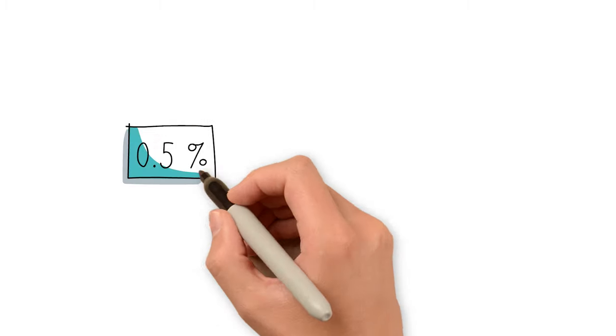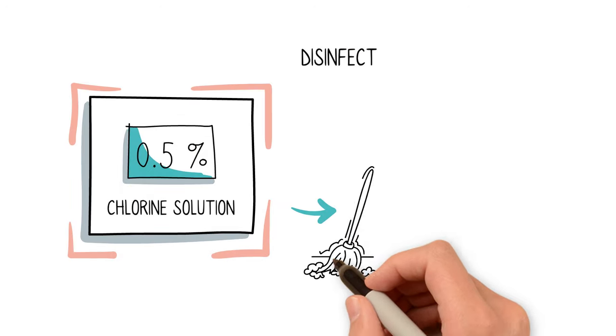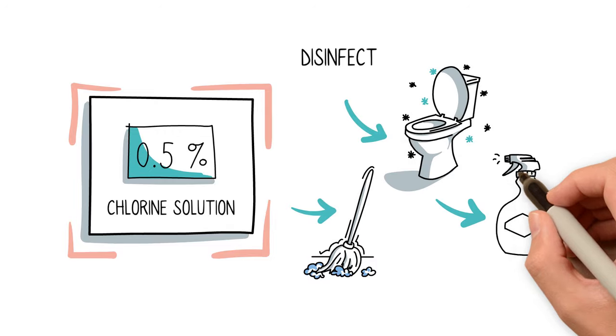Whatever the choice of the product above, the goal is to produce a solution with 0.5% of active chlorine which will disinfect floors, toilets and other objects.